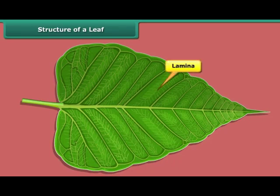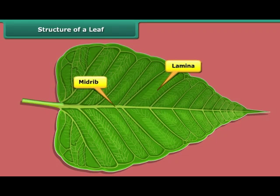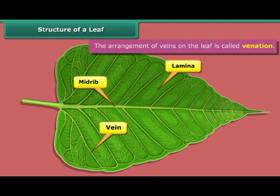The lamina is green in color. The thick line present in the middle of a leaf is called the midrib. The thin lines branching from the midrib are the veins. The arrangement of veins on a leaf is called venation.